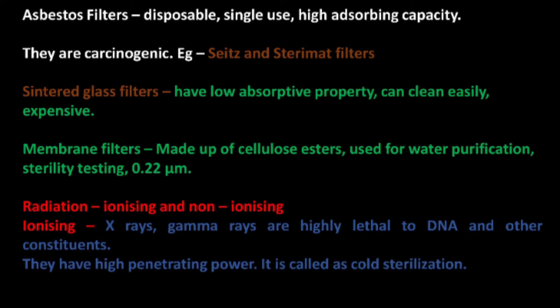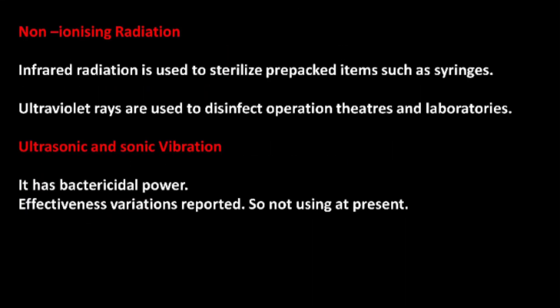Radiation includes two types: ionizing and non-ionizing. Ionizing radiations — such as X-rays and gamma rays — are highly lethal to DNA and other cellular constituents, have high penetrating power, and are referred to as cold sterilization. Non-ionizing radiations include infrared radiation, used to sterilize pre-packed items such as syringes, and ultraviolet rays, used to disinfect operation theaters and laboratories.